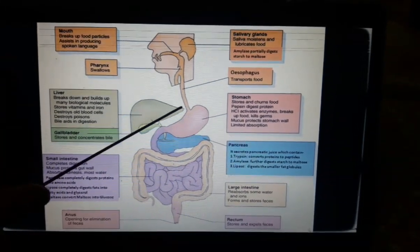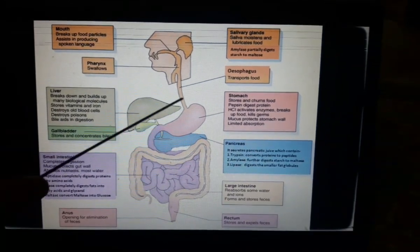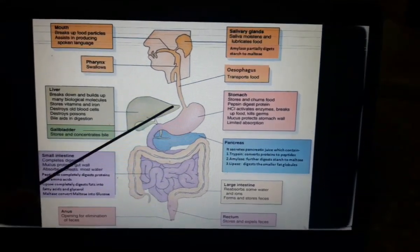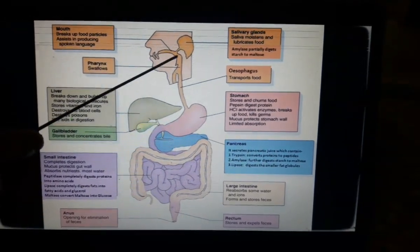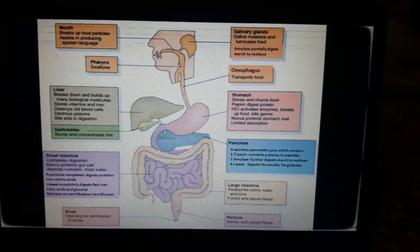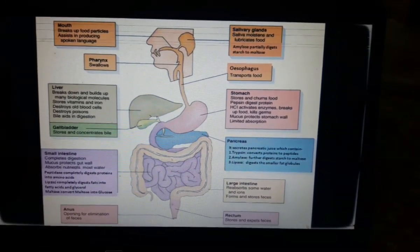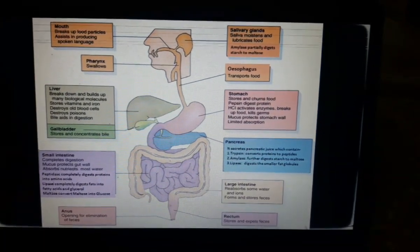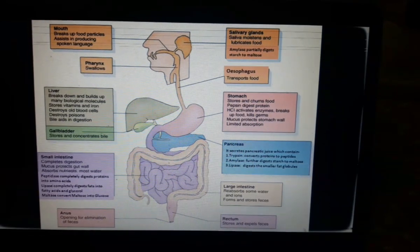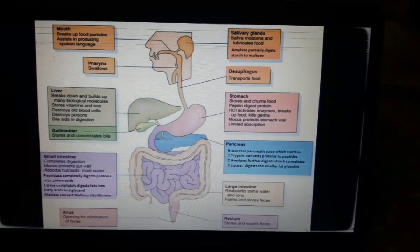This food passes from pharynx to the esophagus. This is also called the food pipe. This is a muscular structure. No digestion takes place over here, but its main function is to pass the food from the mouth to the stomach. How does it pass? The lining of the food pipe has muscles that contract rhythmically in order to push the soft and moist food towards the stomach.